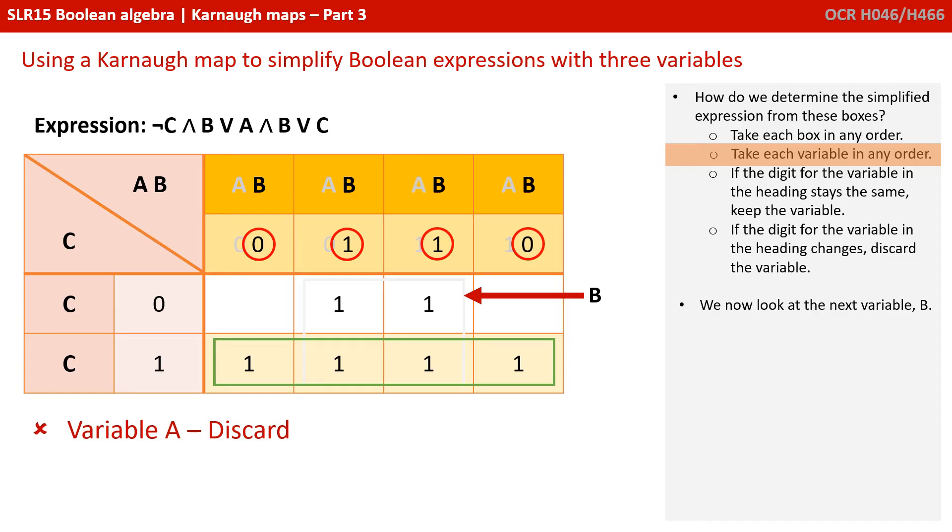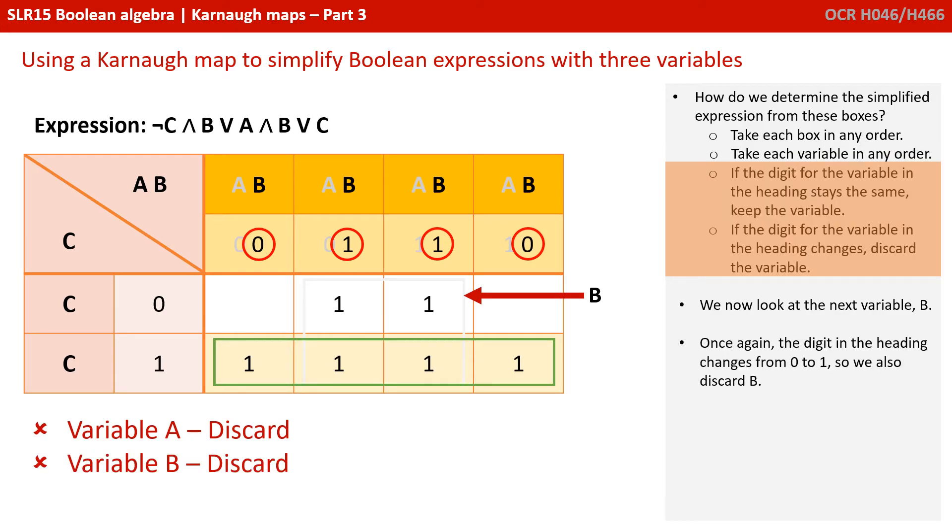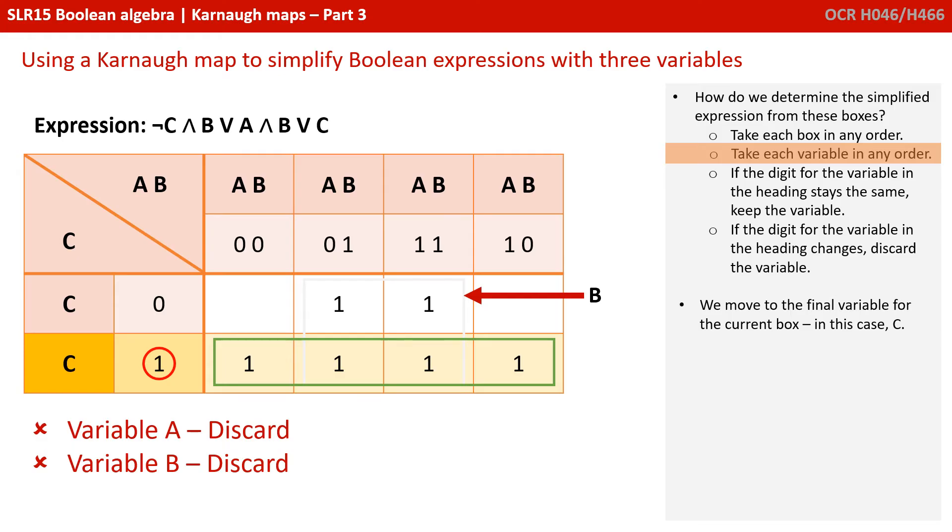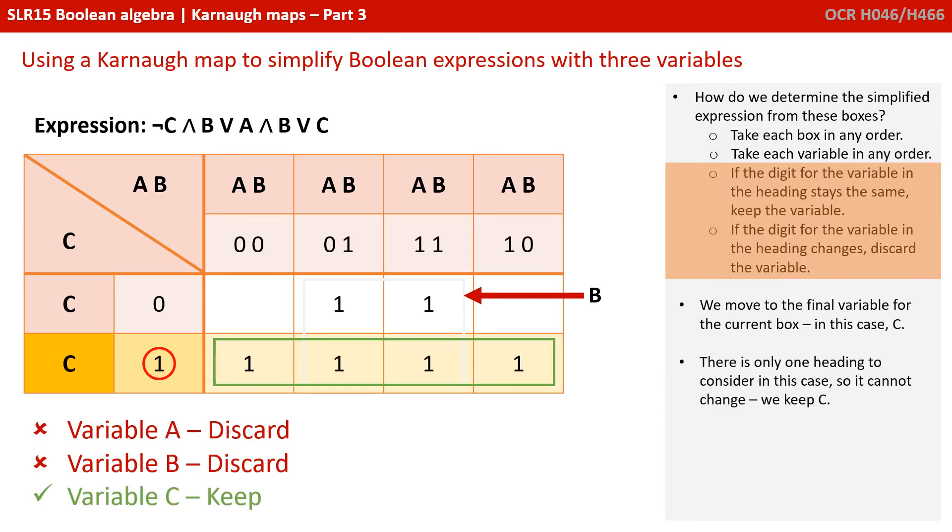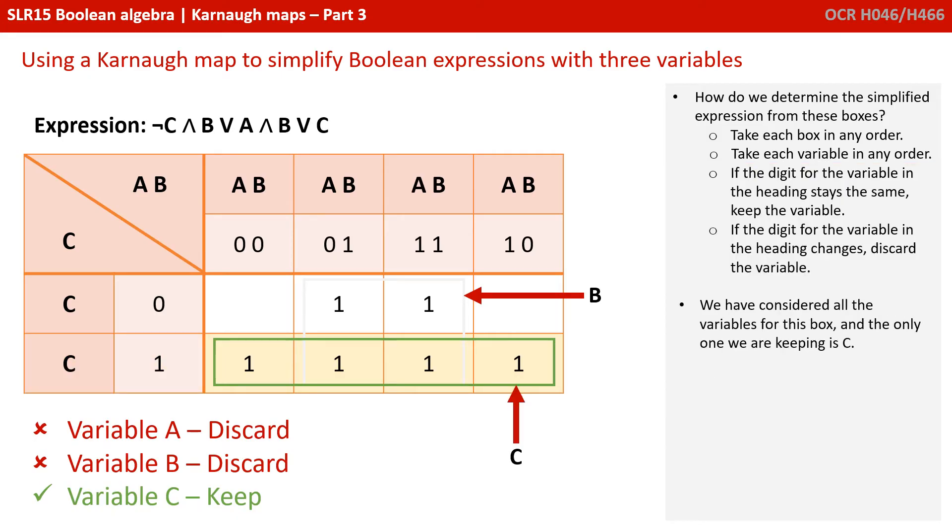We move on to B. Exactly the same thing is true for B. It's changing from 0s to 1s. So, we discard B. And finally, we consider variable C. And there is only one heading to consider here. It's a 1. And obviously, because there's only one heading, it can't change. So, we keep C. We've considered all the variables for this box. And the only one we're keeping is C.